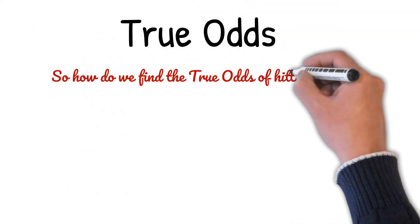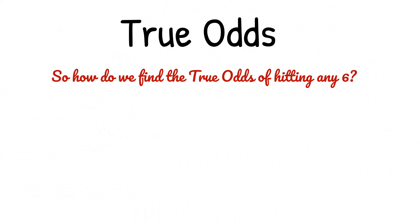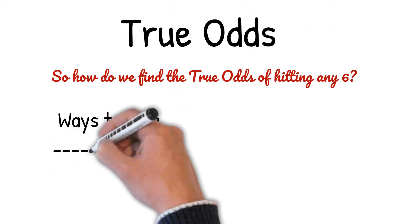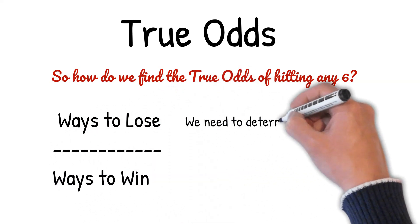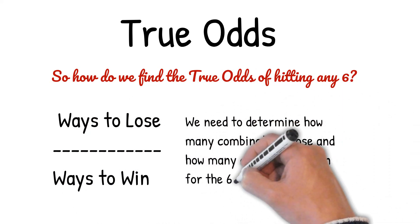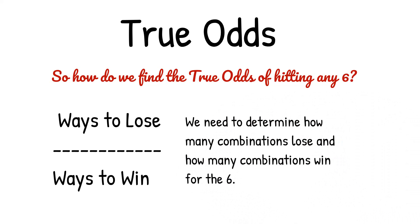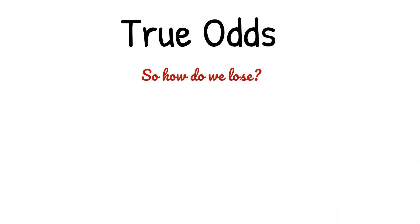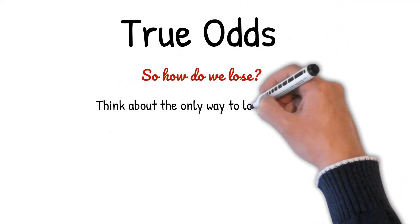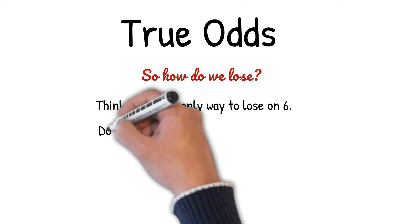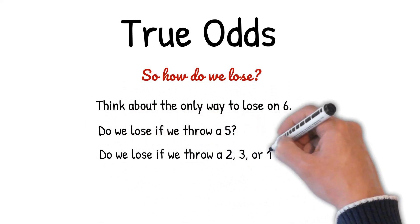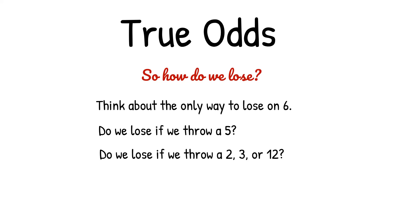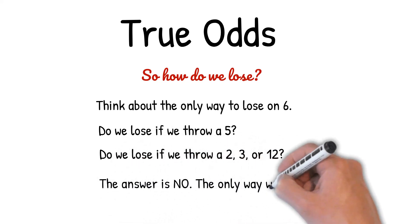So how do we find the true odds of hitting any six? We need to determine how many combinations lose and how many combinations win for the six. Think about the only way to lose on six. Do we lose if we throw a five? Do we lose if we throw a two, three, or twelve? The answer is no — the only way we lose is when the shooter throws a seven.